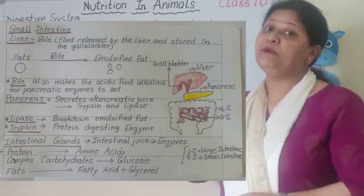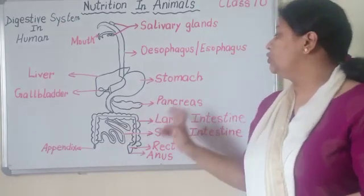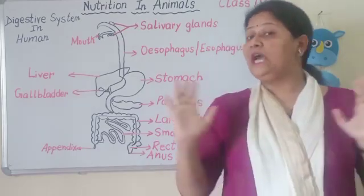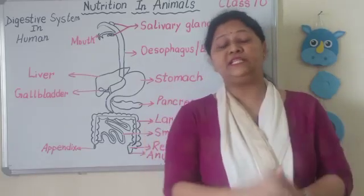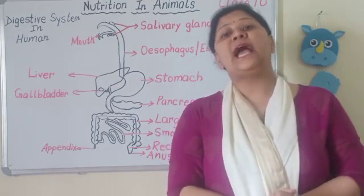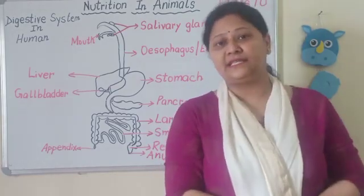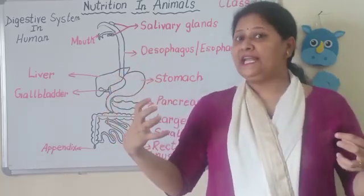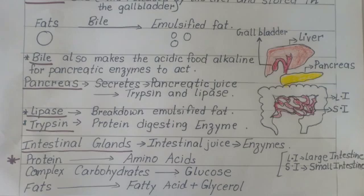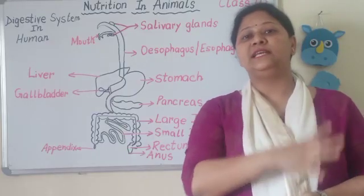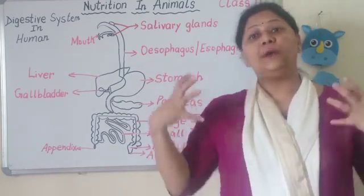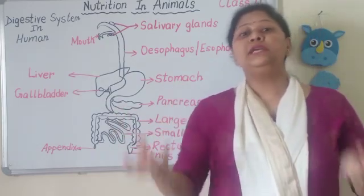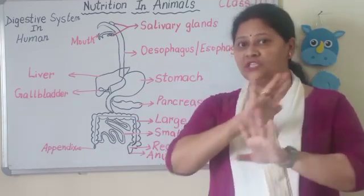Pepsin, jo ki hum ne stomach mein padha tha, woh acidic medium mein kaam karta hai. Jabki jo trypsin hai, woh alkaline medium mein work karta hai and converts food to soluble substances. Ye jo intestinal gland intestinal juice secrete karte hain, aur jis ke andar jo enzyme hota hai — ab ye soluble substance ab small intestine mein absorb hoga. Digestion ka process khatam, ab absorption shuru.